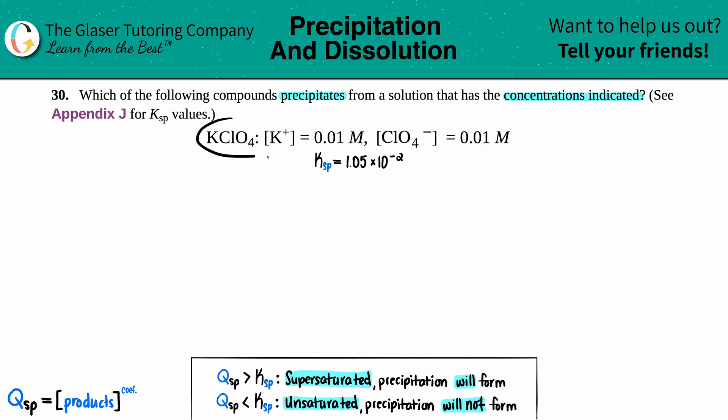We want to know from these molarities, is there going to be a solid that precipitates? Whenever we're talking about precipitation, we know that we're going to be ending up with a solid somewhere in the solution. So stuff that didn't dissolve. Well, how do we find that?